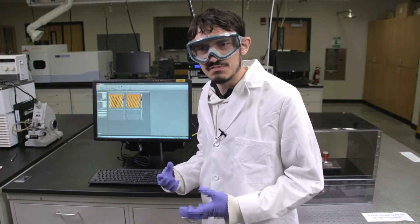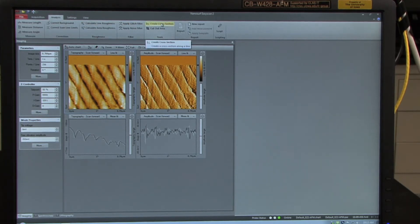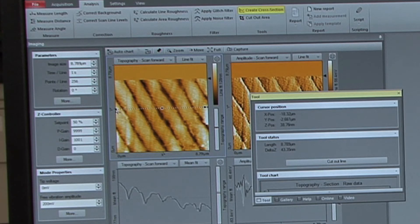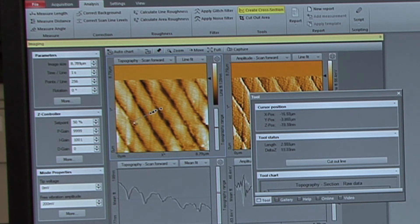Once the zoomed in image has been taken, go to the analysis tab, and click on create cross section. Adjust it such that it only encompasses one ridge.